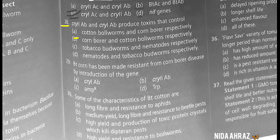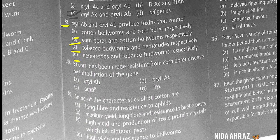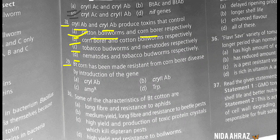cry2ab and cry1ab produce toxins that control cotton bollworms and corn borer respectively. The correct choice is option A: cotton bollworms — cry2ab, and corn borer — cry1ab respectively.